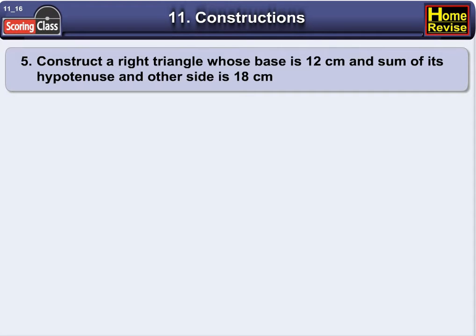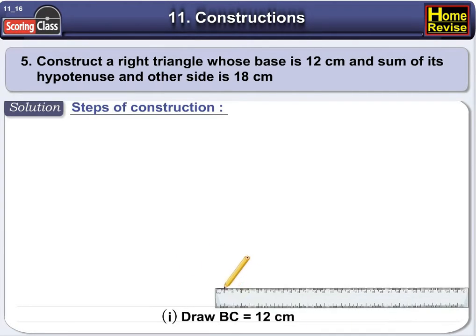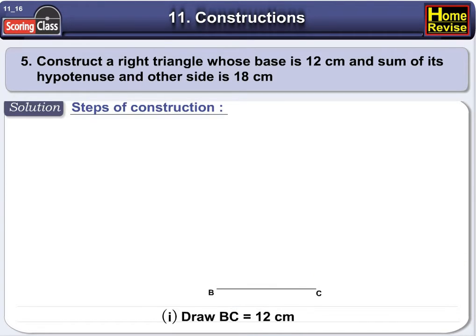Construct the right triangle whose base is 12 centimeters and the sum of its hypotenuse and other side is 18 centimeters. Steps of construction: draw line segment BC as 12 centimeters, then construct angle CBY as 90 degrees.